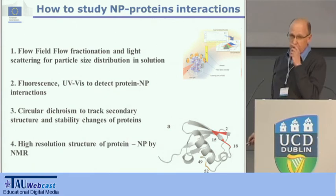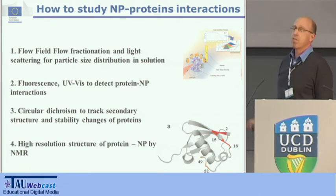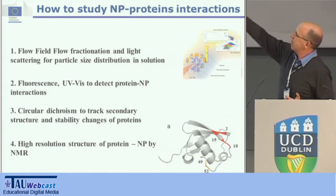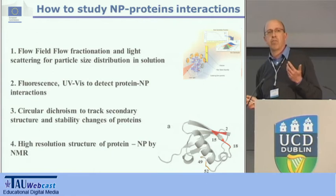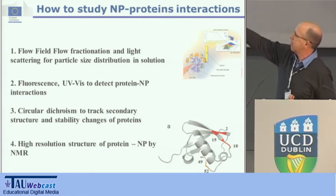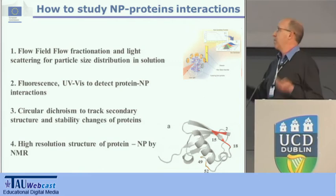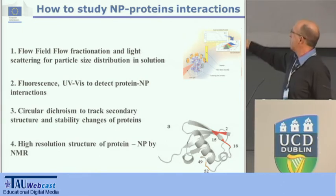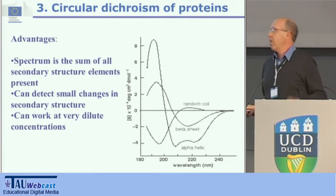So how do we do this? We start from simple things like flow-field flow fractionation and light scattering to measure the particle size distribution in solution, and then fluorescence and UV-visible spectroscopic techniques to detect the interaction of proteins with nanoparticles. Going up in complexity, circular dichroism gives you the secondary structure and can track secondary structure changes and stability. You can go all the way up to the high-resolution three-dimensional structure of the protein using NMR. Today I will talk only about circular dichroism.